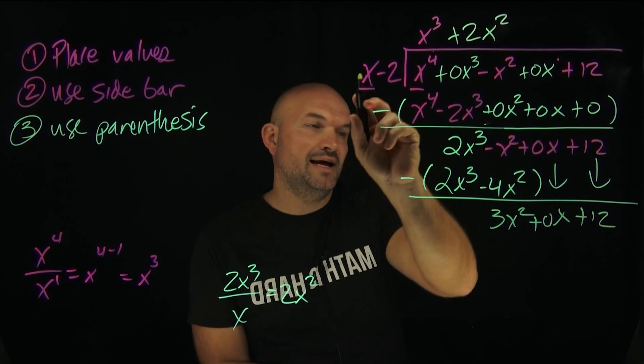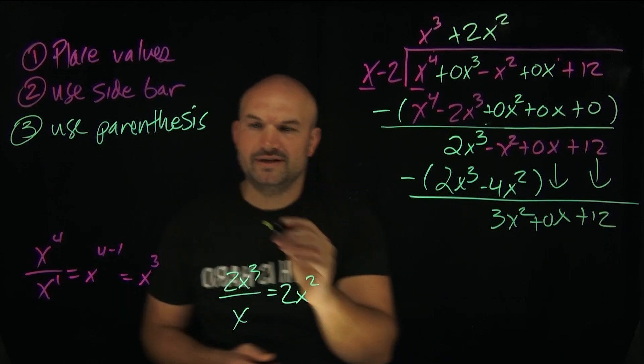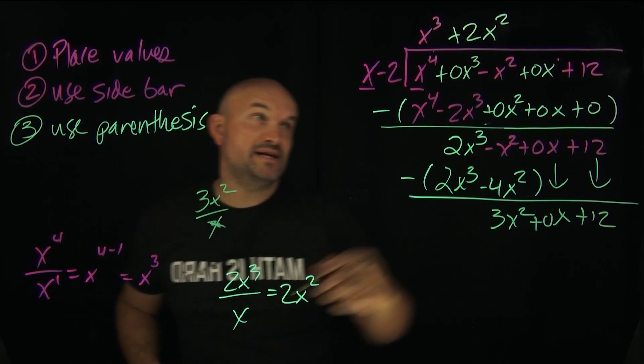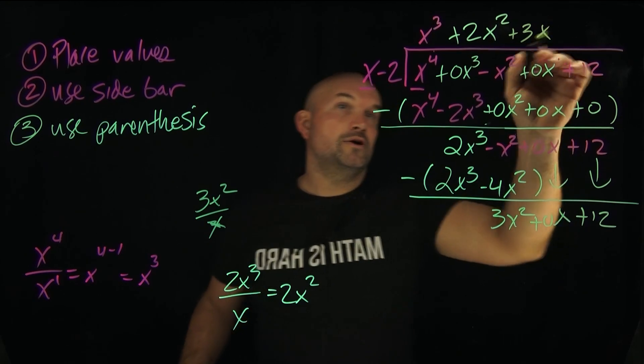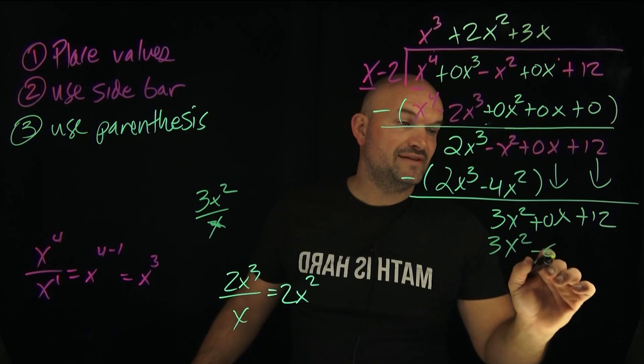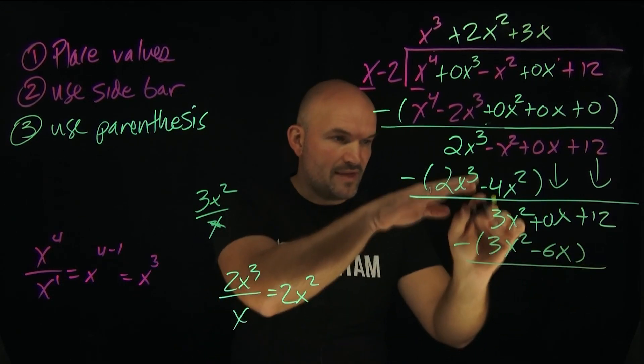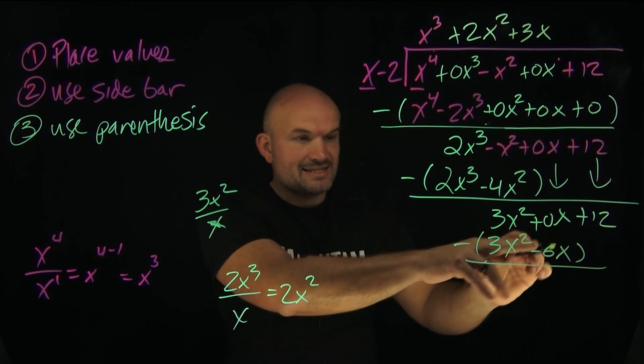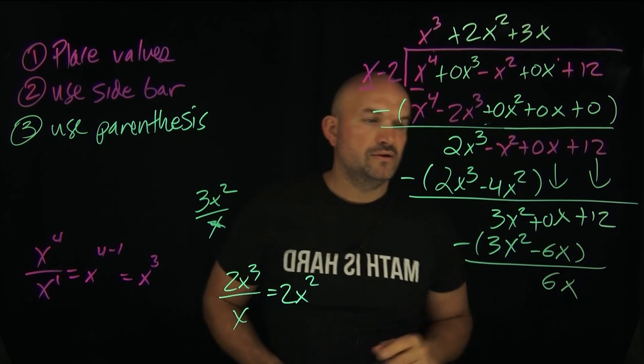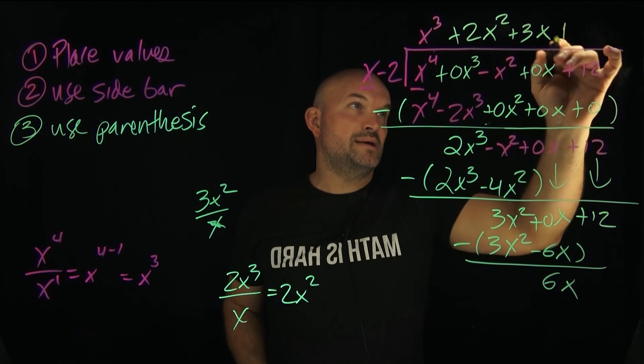Now we just repeat the process. x divides into 3x². Again, you can do it over here if you need to. 3x² divided by x, that's going to just be 3x. 3x times x is 3x². 3x times -2 is going to be -6x. And again, we subtract our rows. 0x minus a -6x, that becomes a positive 6x. Right? Because you're minusing a negative. And then x divides into a positive 6x, that's going to be a positive 6 times.